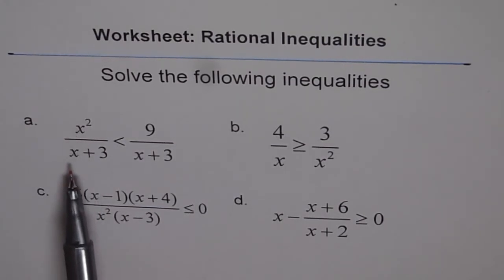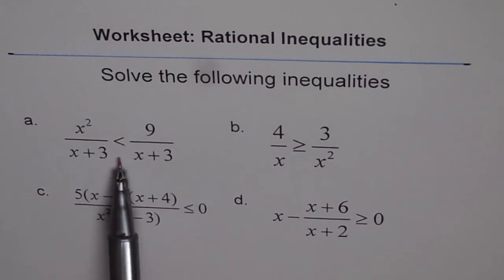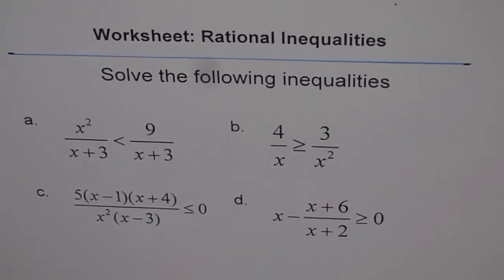Question number one is x squared over (x plus 3) less than 9 over (x plus 3). Make a note of this question. Question b is 4 over x greater than or equal to 3 over x squared.